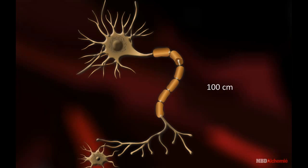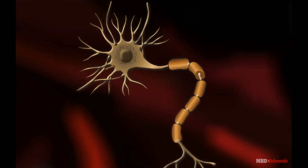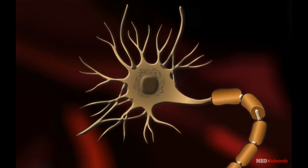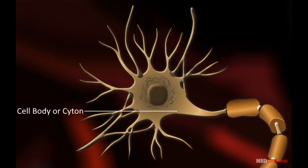A neuron can detect, receive and conduct the nerve impulse to various parts of the body. Cytone is also called cell body. Its granular cytoplasm is called neuroplasm. And in the center, a spherical nucleus with nucleolus is present.